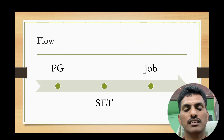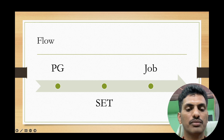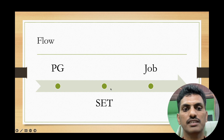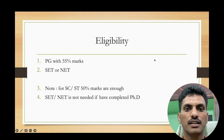Let us see some flow. Here, you can see there is PG — post-graduation. If you have completed post-graduation, you need to appear for the SET or NET exam. If you have both of these, you will be eligible for the Assistant Professor job. We will see the eligibility here.